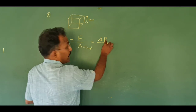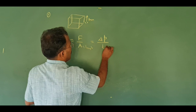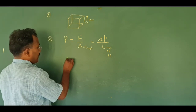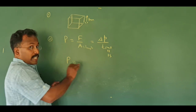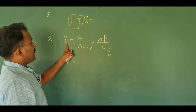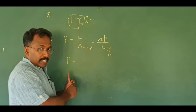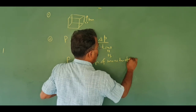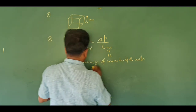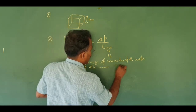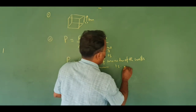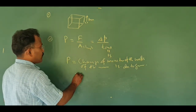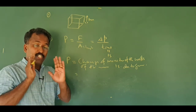Change of momentum is divided by time. So the pressure of a gas inside a container: Pressure P is equal to the change of momentum of the walls of the container in 1 second due to collisions — due to gas molecule collisions. So the pressure of a gas molecule is the pressure due to change of momentum.